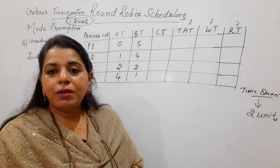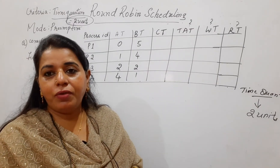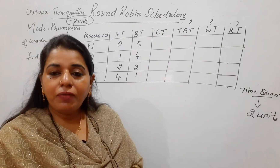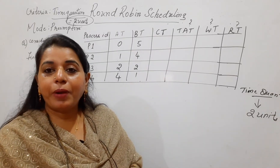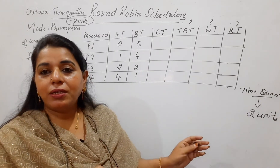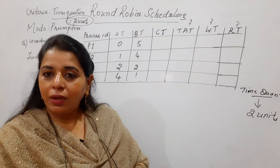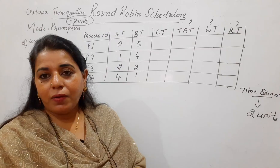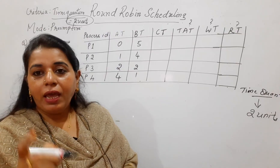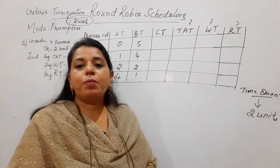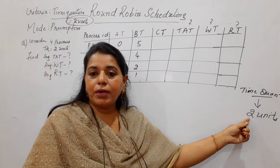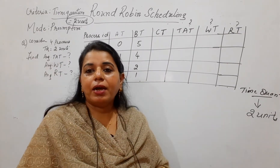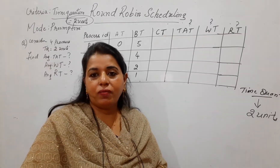After scheduling a process for the time quantum, preempt it and schedule the next process if it has arrived. Only for two units, schedule the next process, then preempt. This is how you carry out this particular algorithm. If the burst time of a process is lesser than the time quantum, then it will complete its job in one go.